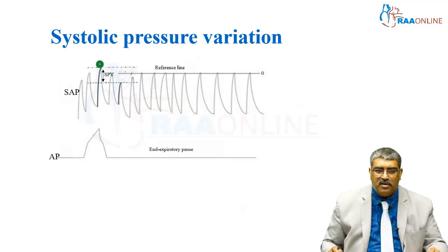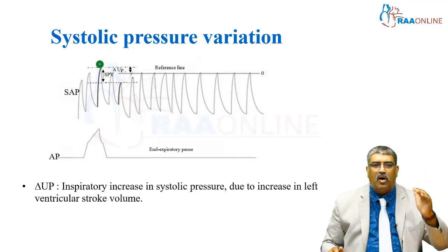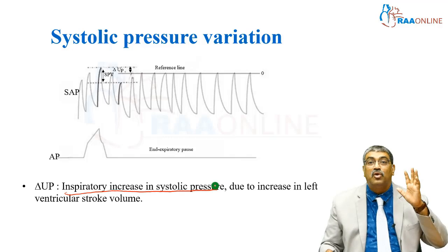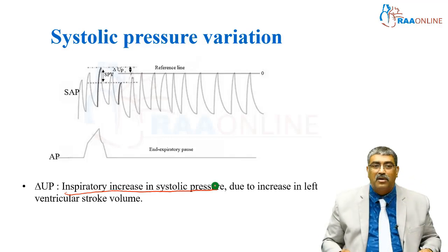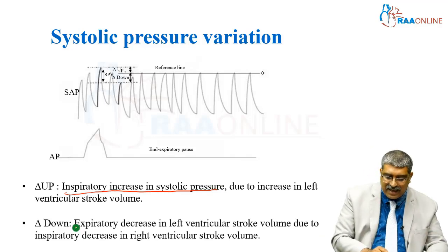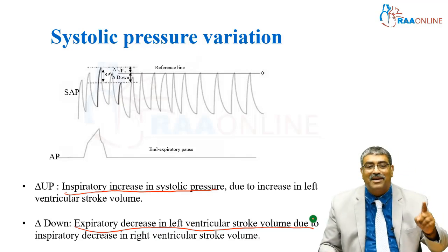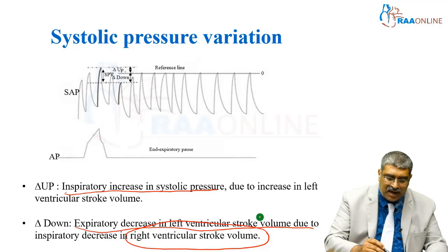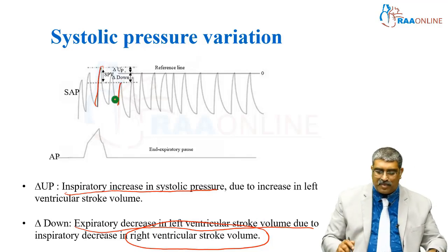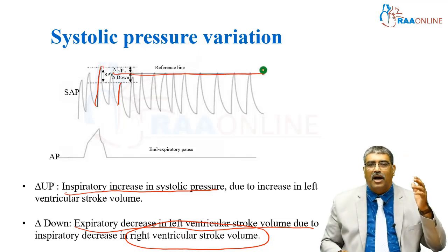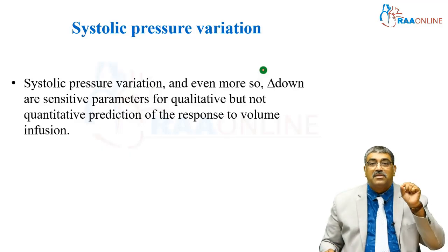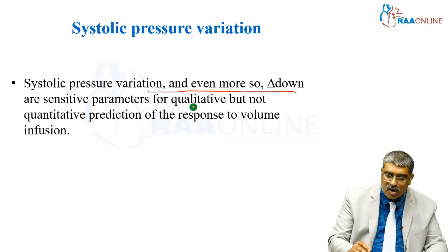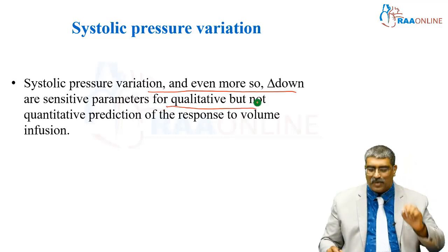Coming to systolic pressure variation. You measure the peak systolic pressure or delta up. The delta up is nothing but the inspiratory increase in systolic pressure due to increase in left ventricular stroke volume. Then you measure the delta down, which is the expiratory decrease in left ventricular stroke volume due to inspiratory decrease in right ventricular stroke volume, which is reflected later. You measure the maximum, minimum, and mean systolic pressure and calculate the systolic pressure variation. Systolic pressure variation, and even more the delta down, are the more sensitive parameters for qualitative but not quantitative prediction of response to volume infusion.